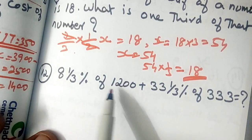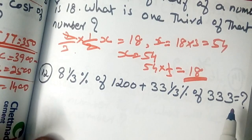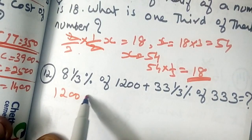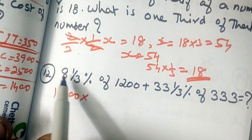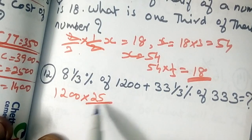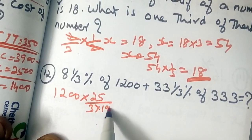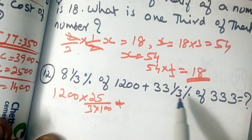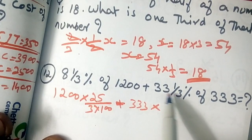Question number 12: 8 and 1/3 percentage of 1200 plus 33 and 1/3 percentage of 333 — what is the answer? Let's divide by 100 to work out each percentage term.